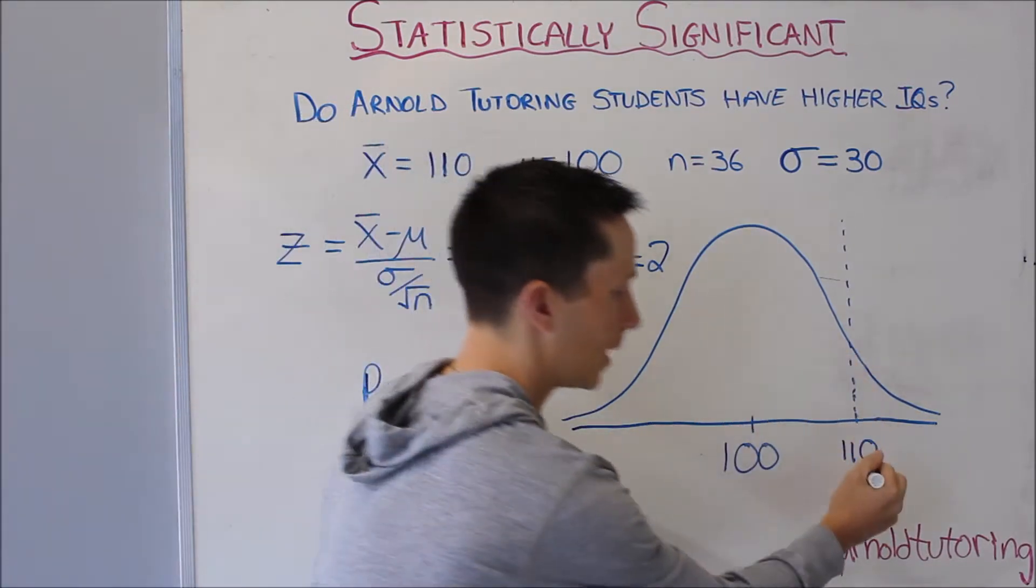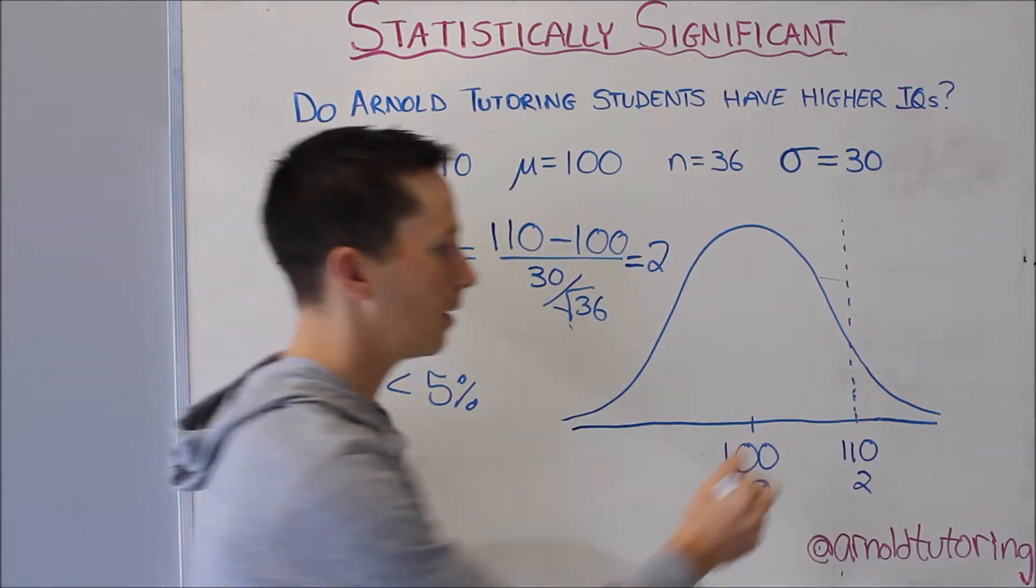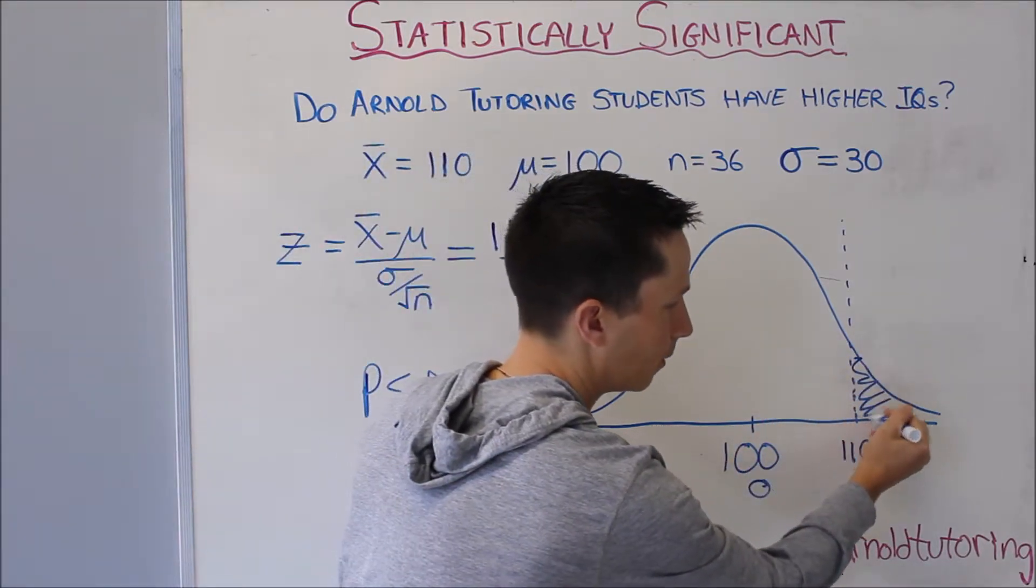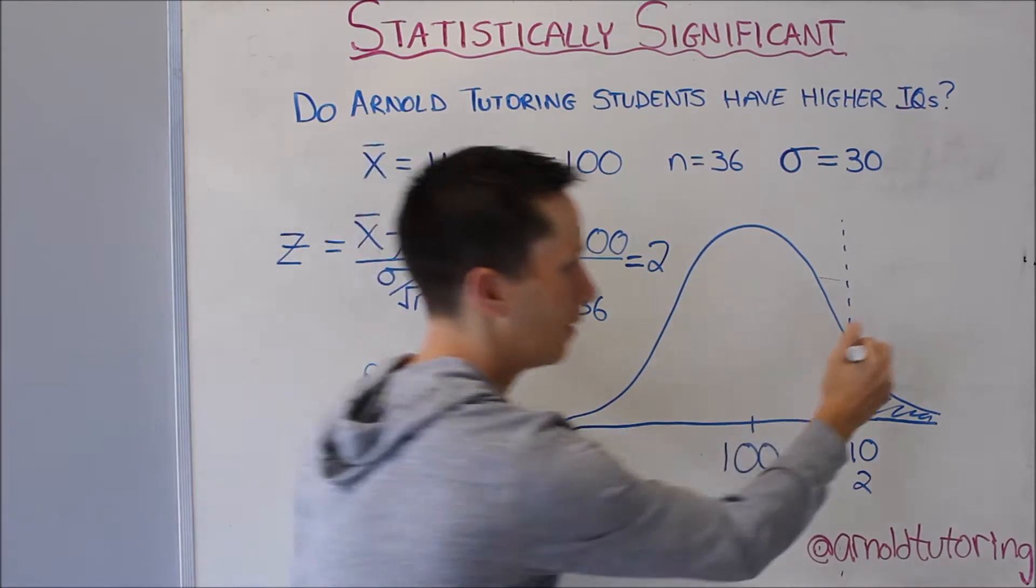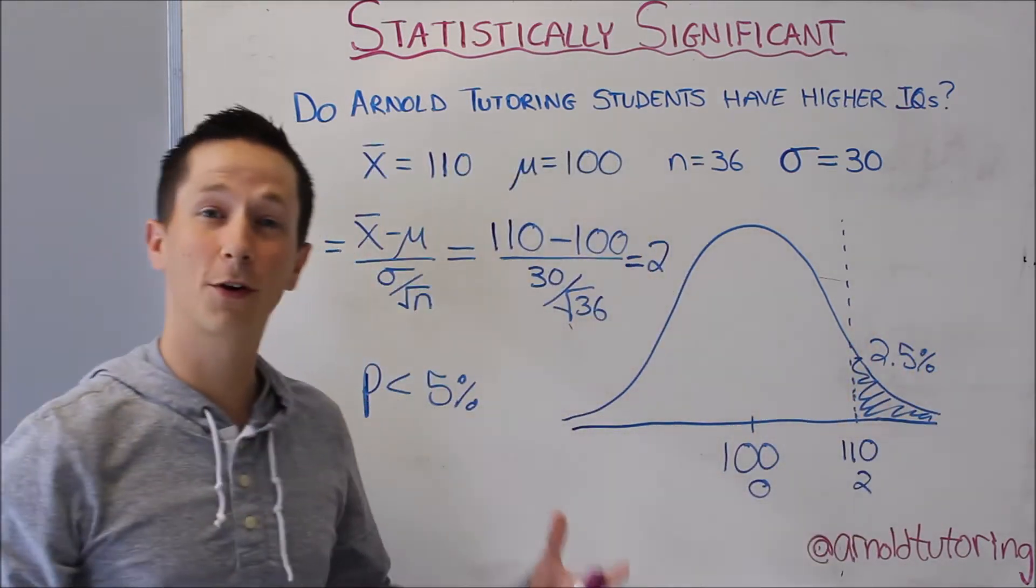...lies out here, where zero would be in the middle and 2 would be out there. And if you look that up in the table, the probability of falling outside here is about 2.5 percent.